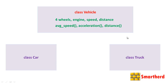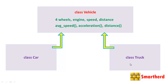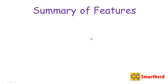All these methods and variables are common to both class Car and class Truck. We can make use of inheritance: class Car < Vehicle, and similarly class Truck < Vehicle. This way, both Car and Truck inherit all the properties of class Vehicle.